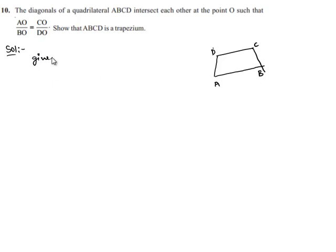So now we can write the given as ABCD is quadrilateral and diagonals AC and BD intersect at O.